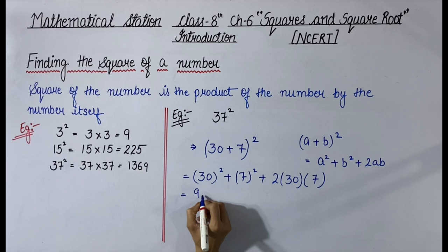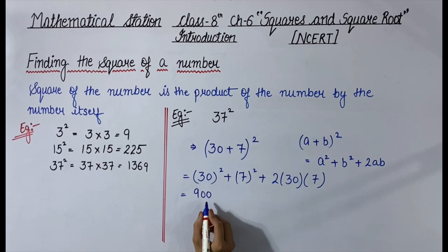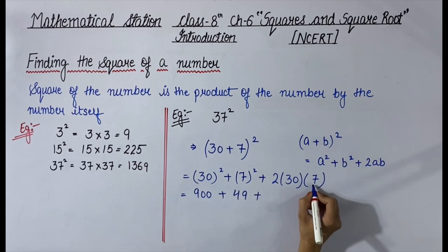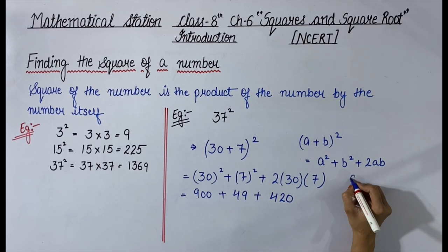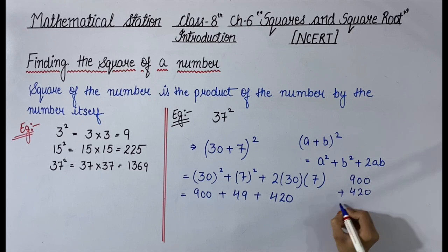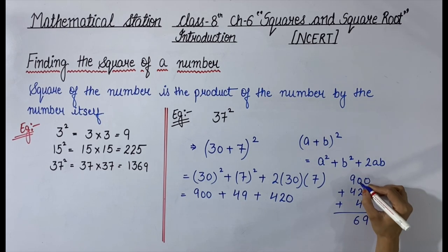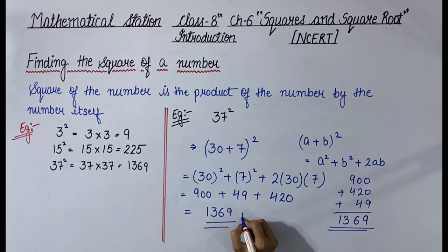Now calculating: 30 squared is 900, 7 squared is 49, and 2 × 30 × 7 is 420. Adding these three numbers: 900 + 420 + 49. Adding step by step: 9, then 6, then 13 — the answer is 1369.